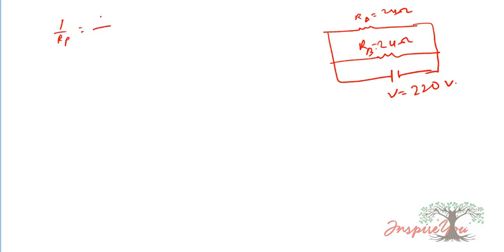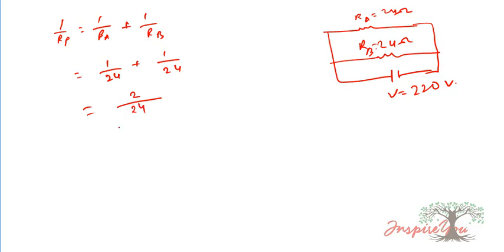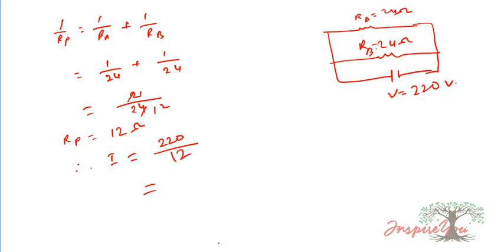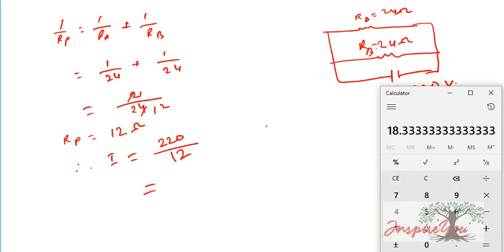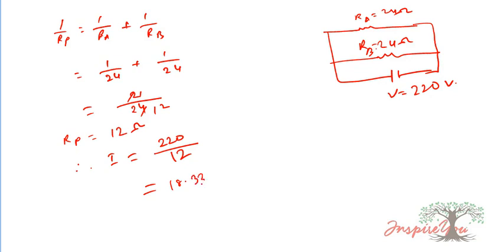For the parallel case: 1/R_p = 1/R_a + 1/R_b = 1/24 + 1/24 = 2/24 = 1/12, so R_p = 12 ohm. Therefore I = V/R = 220 divided by 12 = 18.33 ampere.